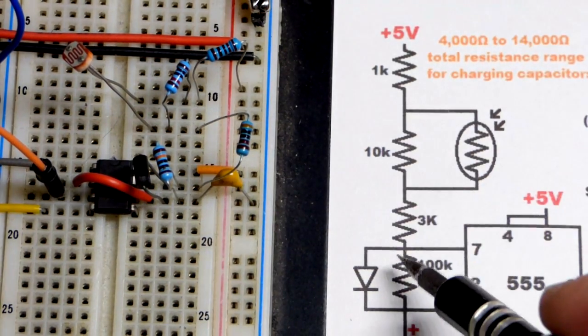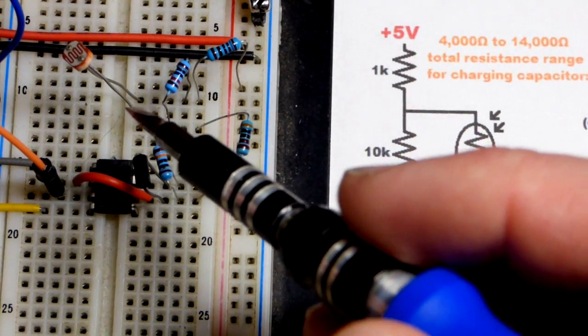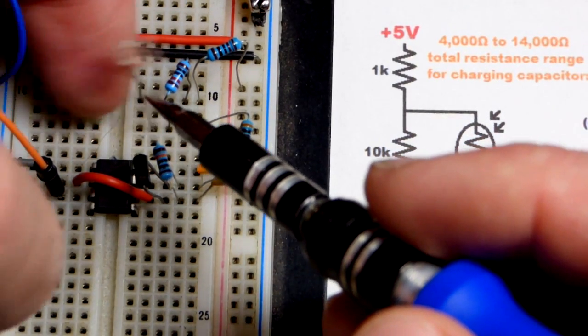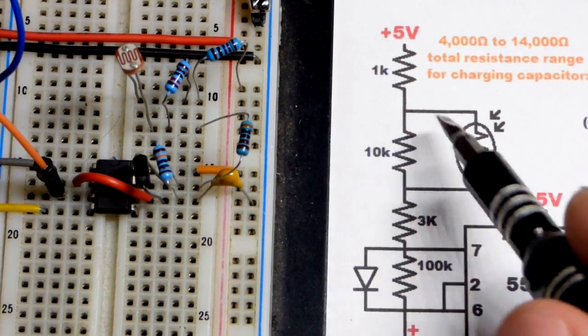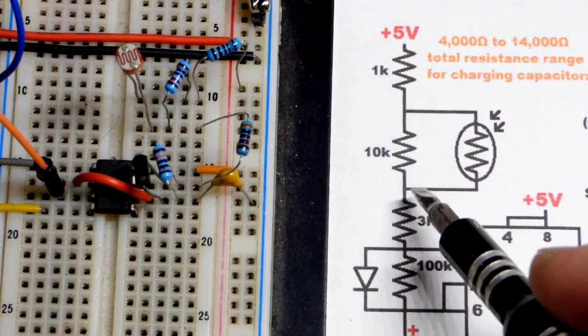As you can see there, going through the diode, that is our maximum resistance. Because when light falls on the light dependent resistor it starts conducting better, so we get more current flowing through the light dependent resistor.